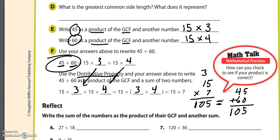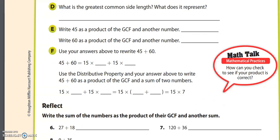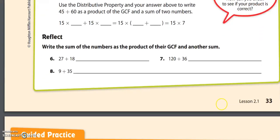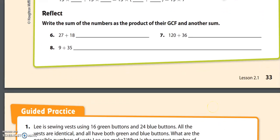Kind of interesting, kind of tricky. I'm definitely going to help you on the reflect questions at the bottom of the page because we're at introduction here, not mastery. So please don't freak out if this is a little confusing. The reflect says: write the sum of the numbers as the product of their GCF and another sum. The first thing you need to do is find the GCF — what is the greatest common factor of 27 and 18?